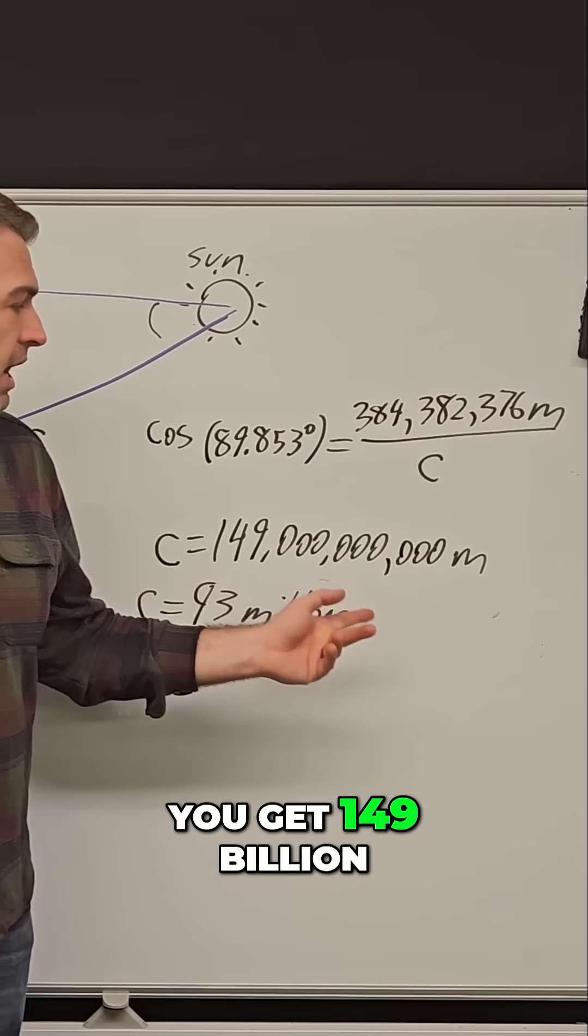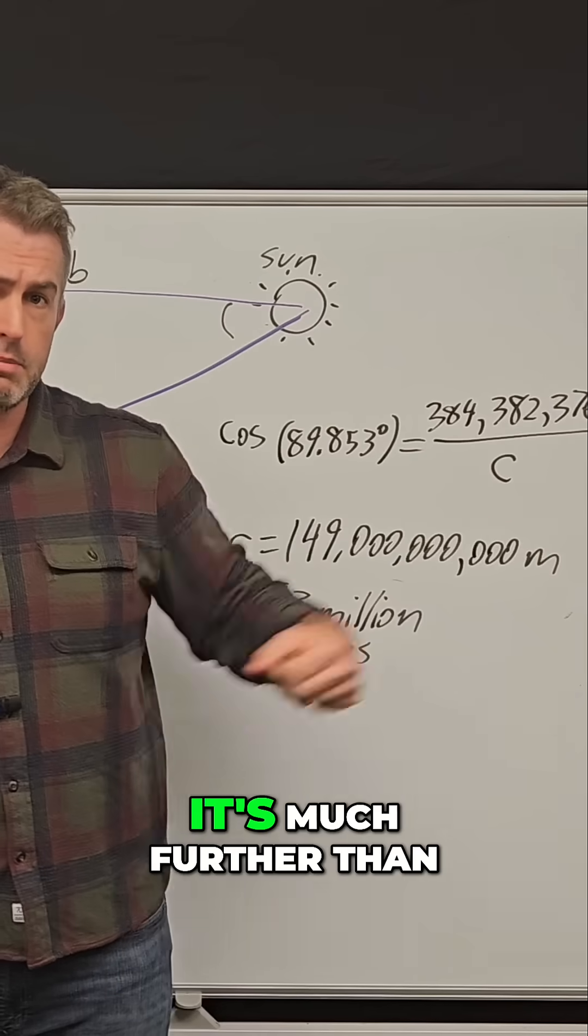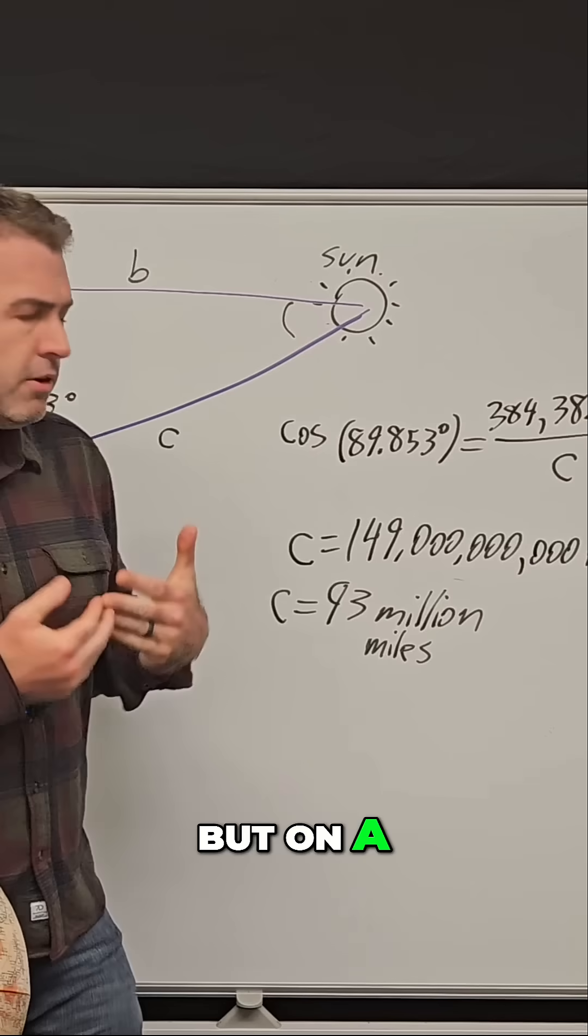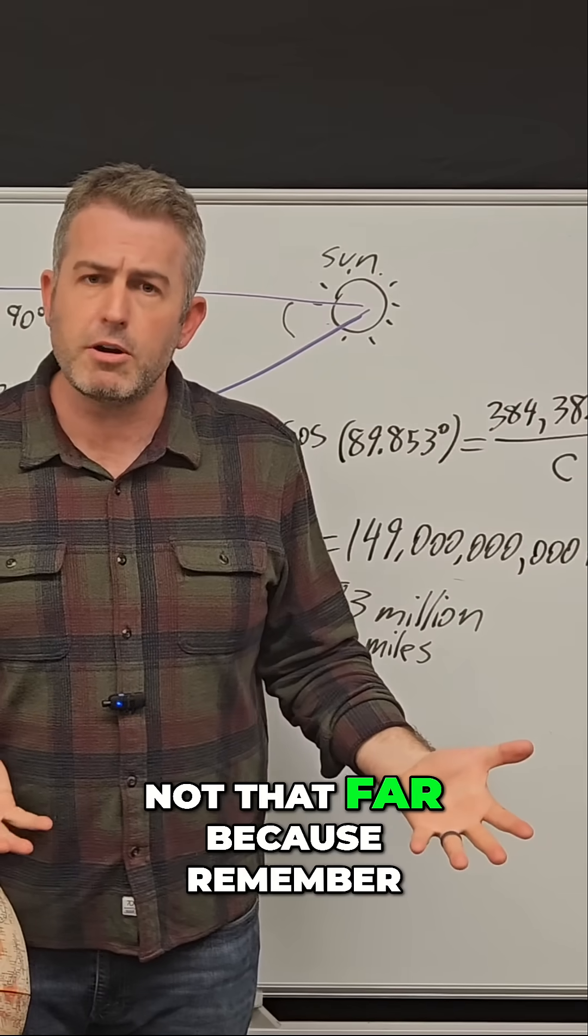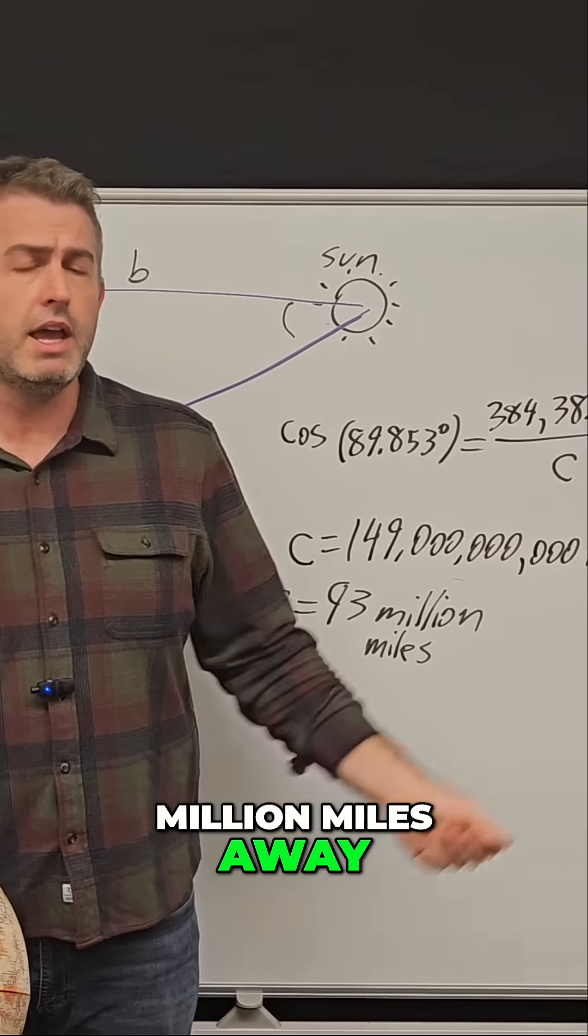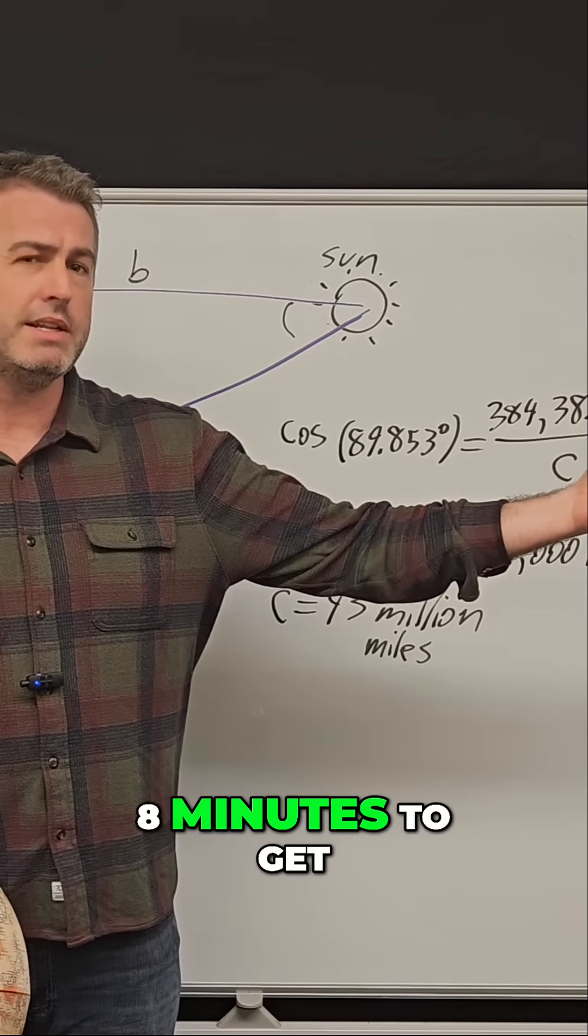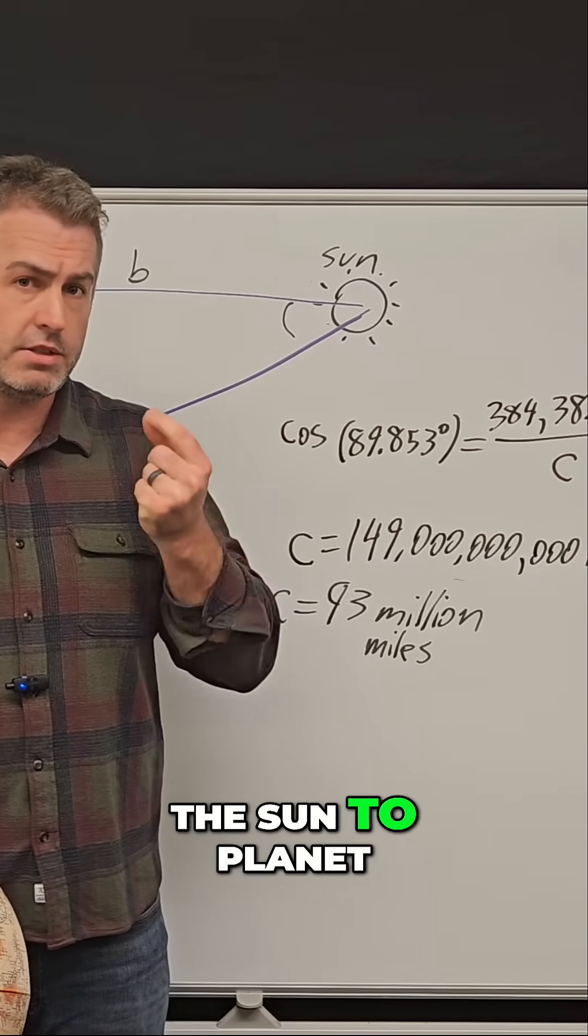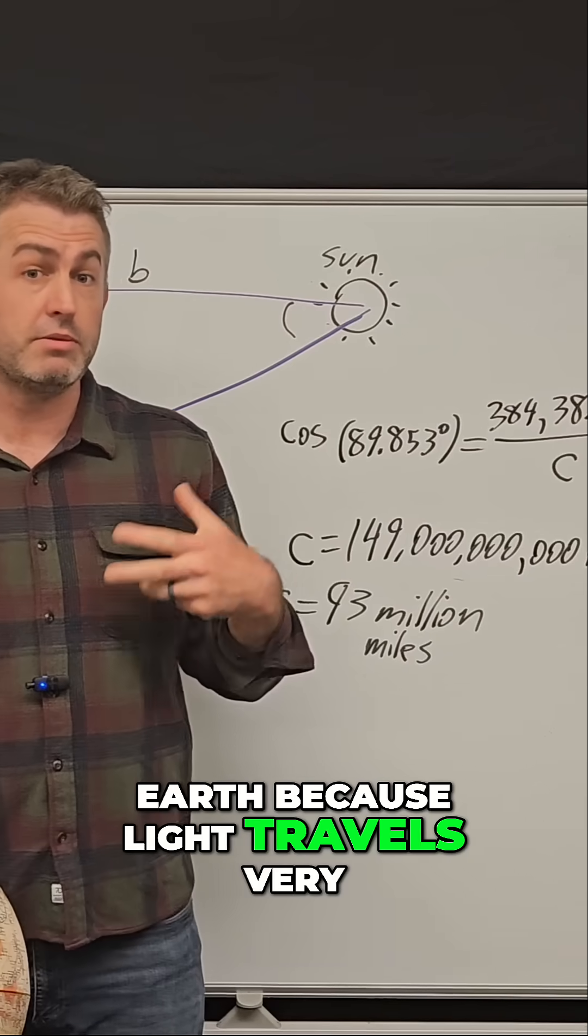you get 149 billion meters away. It's much further than most people can comprehend, but on a universal scale, it's really not that far because remember, despite the fact that the sun is 93 million miles away, it only takes light eight minutes to get from the surface of the sun to planet earth because light travels very fast.